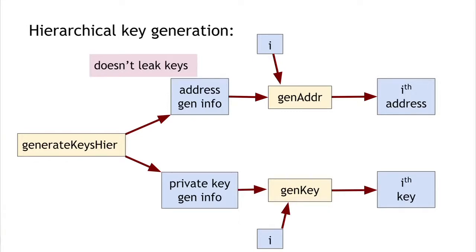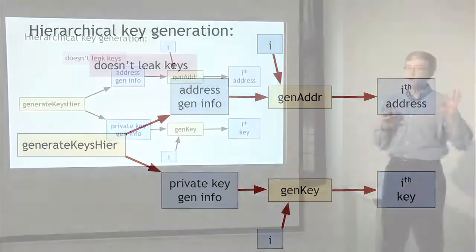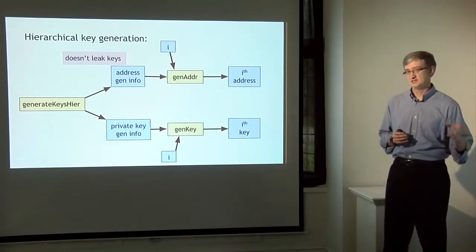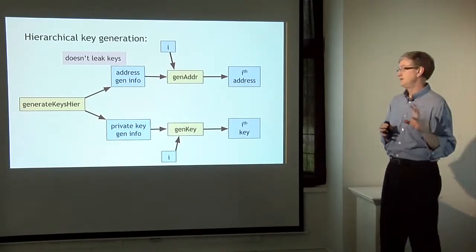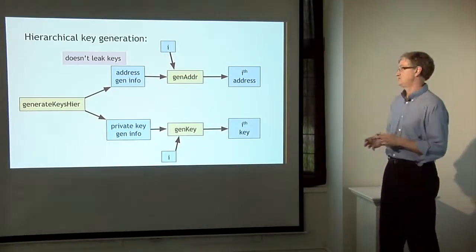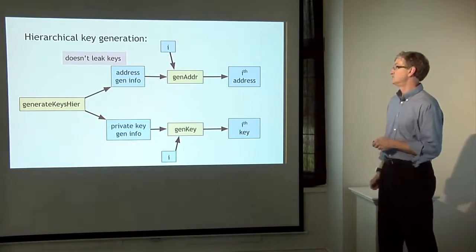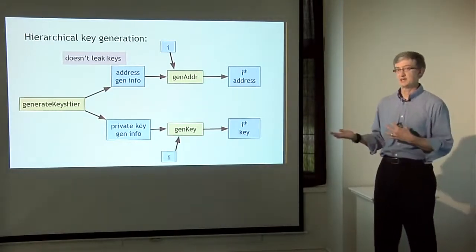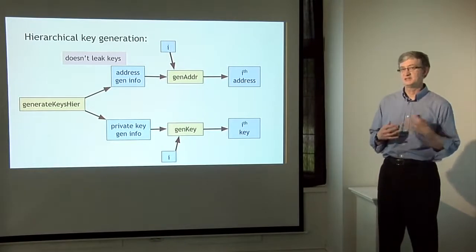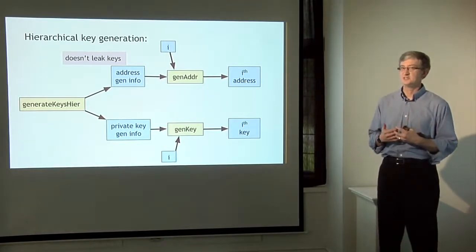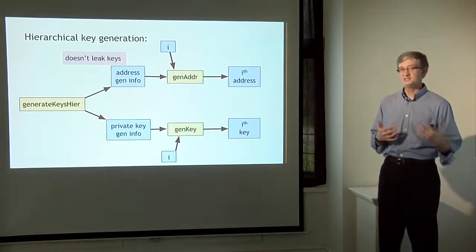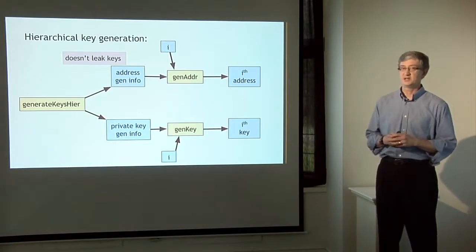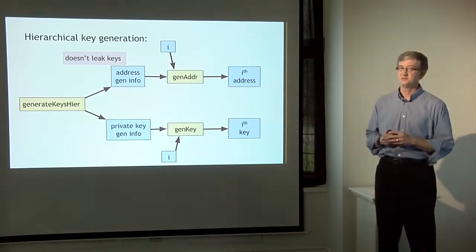Not all digital signature schemes can be modified in this way to support hierarchical key generation — some can and some can't. The good news is that the digital signature scheme used by Bitcoin, called ECDSA, does support hierarchical key generation. So we can do this trick.